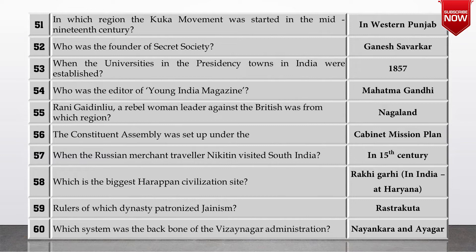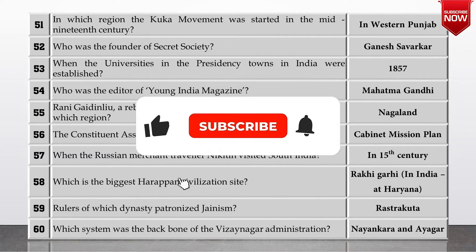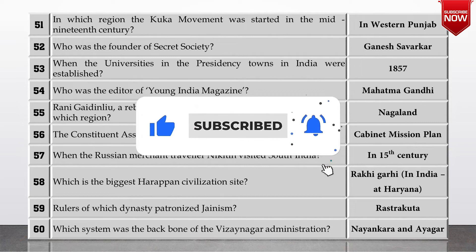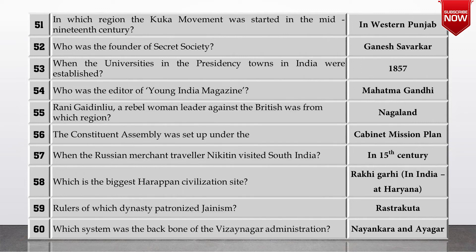In which region was the Kuka movement started in the mid-19th century? The answer is western Punjab. Next question: who was the founder of the secret society? The answer is Ganesh Savarkar. When were the universities in the presidency towns in India established? The answer is in 1857.